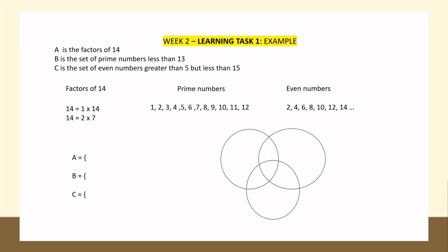This is an example for Learning Task 1. You are asked to list down inside the diagram what is asked in each set. Set A is the factors of 14, Set B is the set of prime numbers less than 13, and Set C is the set of even numbers greater than 5 but less than 15. To complete the Venn diagram you need to identify first the elements in each set.